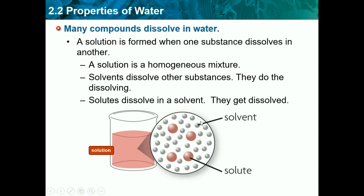Solute has fewer letters, so it's the one being dissolved because there's less of it. In this image, the solvent is the white particles — there are way more of them and the word is longer. The solutes are the small red ones, only four compared to all the rest. The solute is being dissolved in the solvent, and this is the solution. It's homogeneous because it's the same throughout and you can't see any particles.